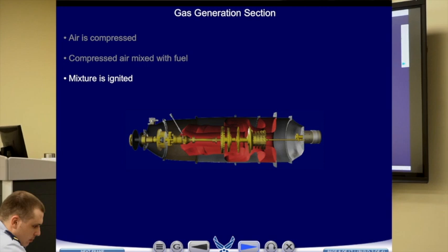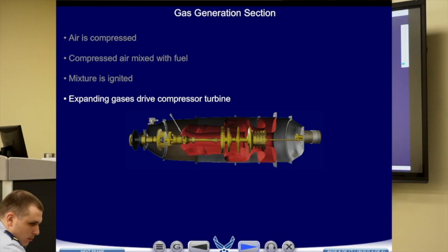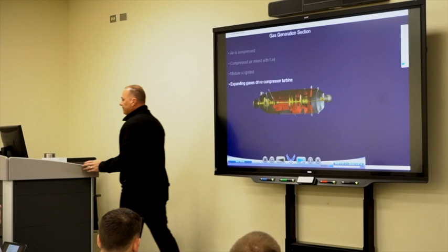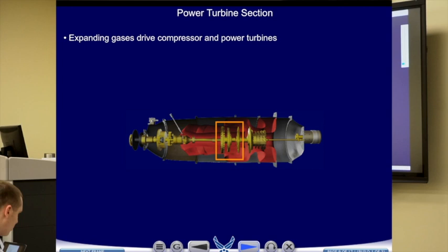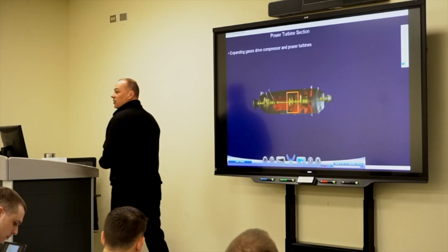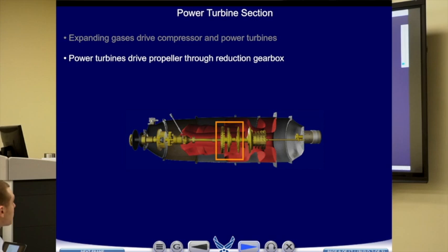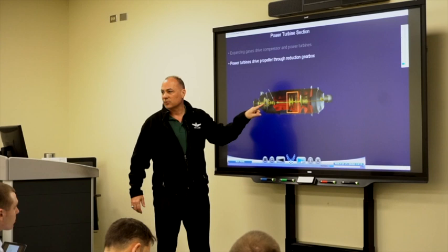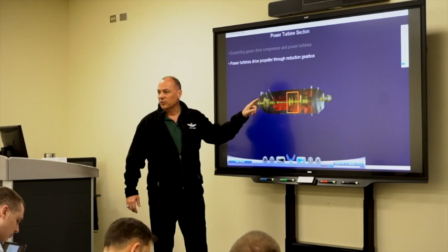The expanding gases drive the compressor turbine — right here — and then also drive the power turbines. This is important to know: the expanding gases drive both the compressor and the power turbines. The power turbines themselves drive the propeller through the reduction gearbox. The turbine section is spinning at about 30,000 RPM, then it goes into the reduction gearbox up near the front of the engine, where gearing mechanisms drive it down to 2,000 RPM.